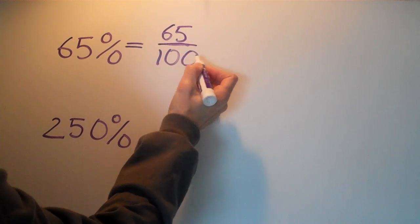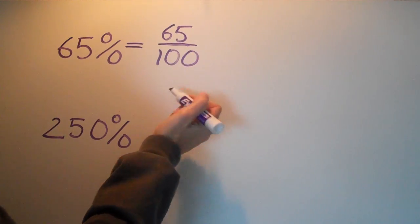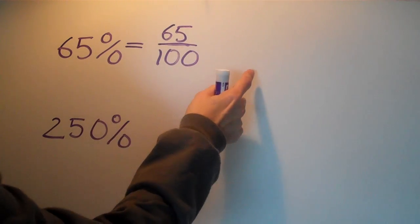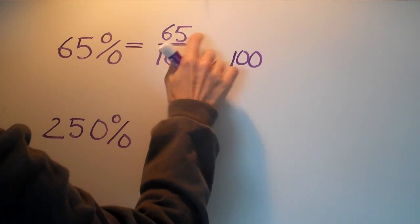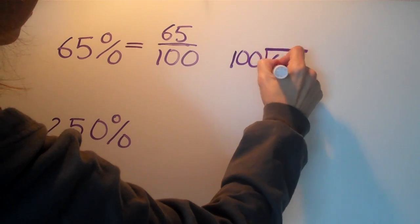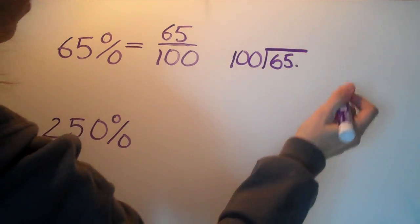But we know a fraction is really division, right? So if we wanted to figure this out the long way and go from percent to decimal, we would take 100 on the outside, we put the top dog in the doghouse, and we can do a division problem.